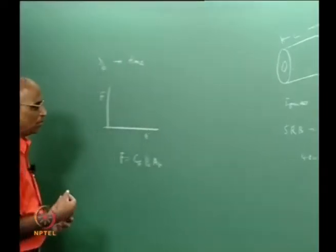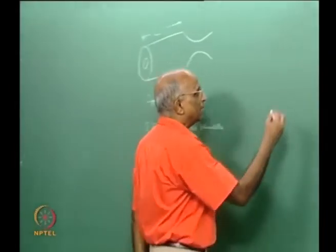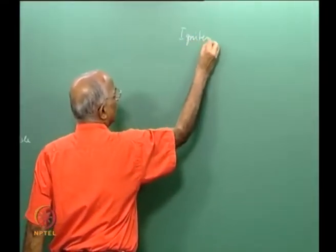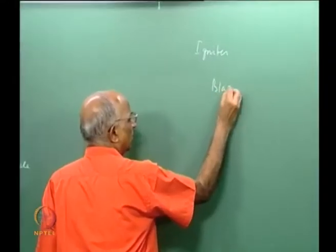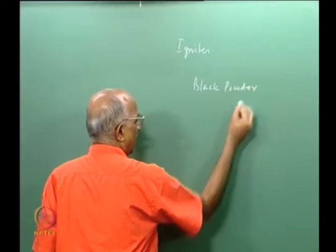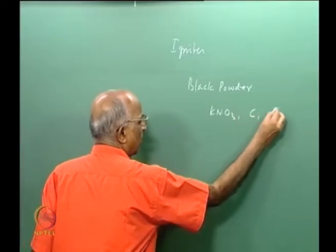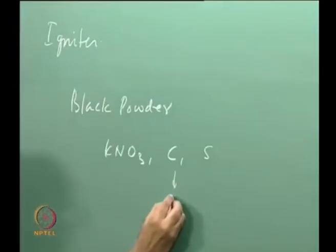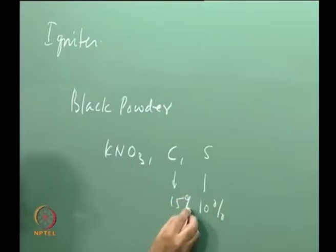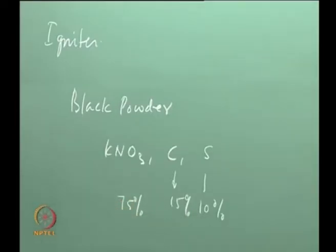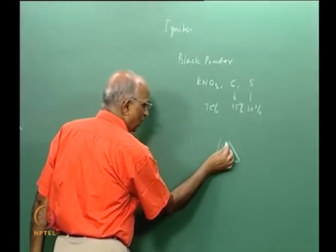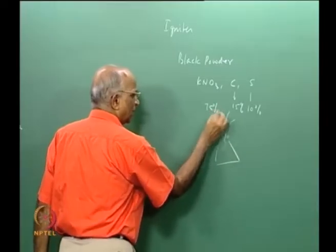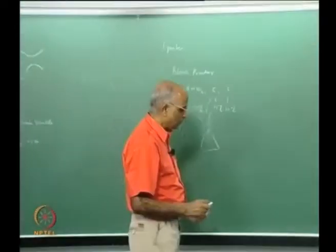That is what I will be talking about in the first half of the class — namely, how do you make an igniter, and what should the igniter be made of? Well, we can immediately say the igniter is something which catches fire soon. Therefore, maybe I will use something like black powder, which is used for firecrackers. This consists of potassium nitrate (KNO₃), maybe some carbon, and some sulphur — typically around 15% carbon, maybe 10% sulphur, and about 75% KNO₃. This is an easily ignitable composition; with just a matchbox it begins to flare up.